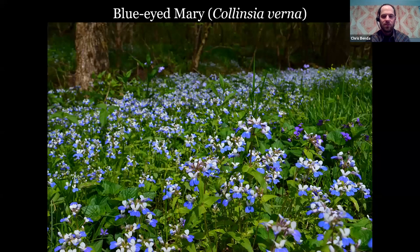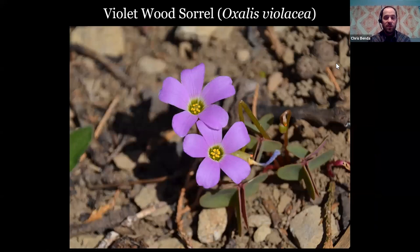Blue-eyed Marys are beautiful — that's at Giant City. That's an annual. We also have wood sorrel — I took this picture in my driveway, where it blooms out front. You can see the leaves all folded up and purple underneath. It's a little dainty flower.